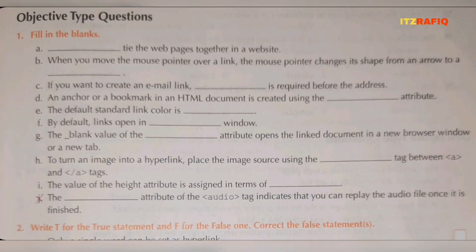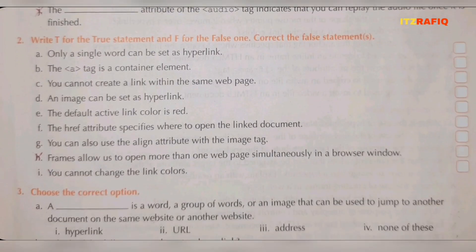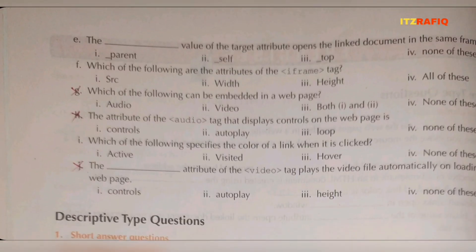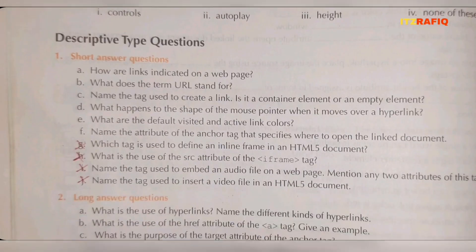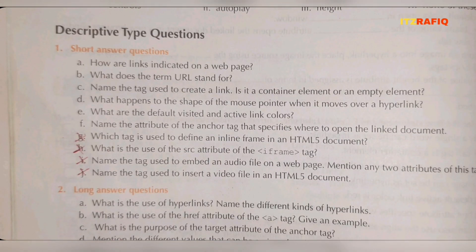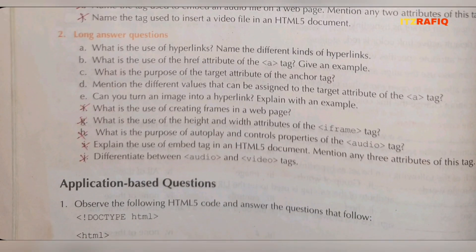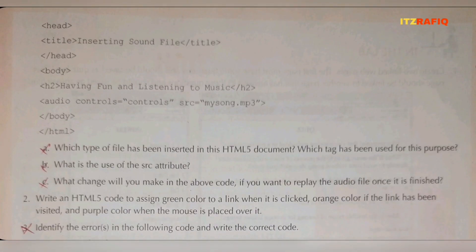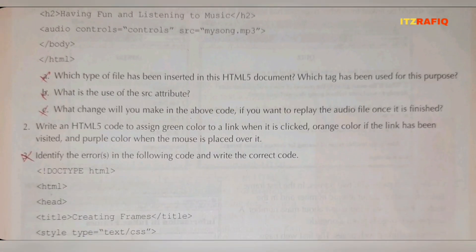For Chapter 4, fill in the blanks number Z is not required. True and false H is not required. Multiple choice Z, H, J are not required. Short answers G, H, I, J are not required. From long answers, from F all the questions are not required. For application based, question 1 and questions 4 and 5 are not required — you need only question 2.